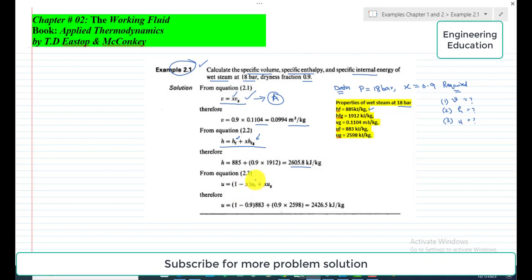So u = (1 - 0.9) × 883 + 0.9 × 2598 kilojoules per kilogram. Simplifying this, we get 2426.5 kilojoules per kilogram.